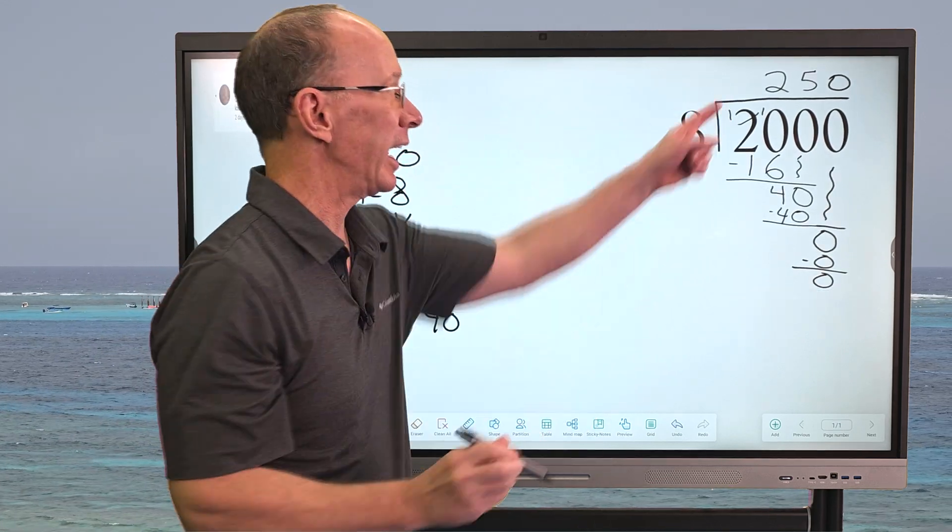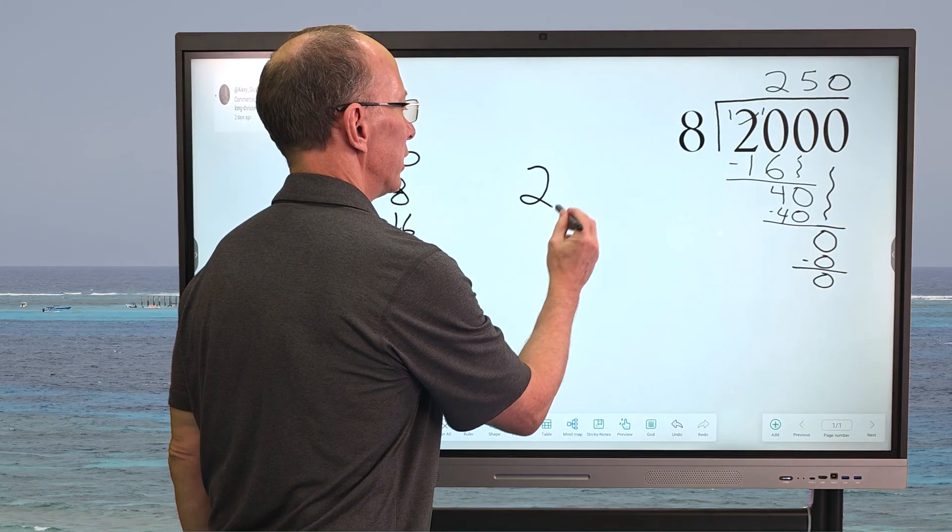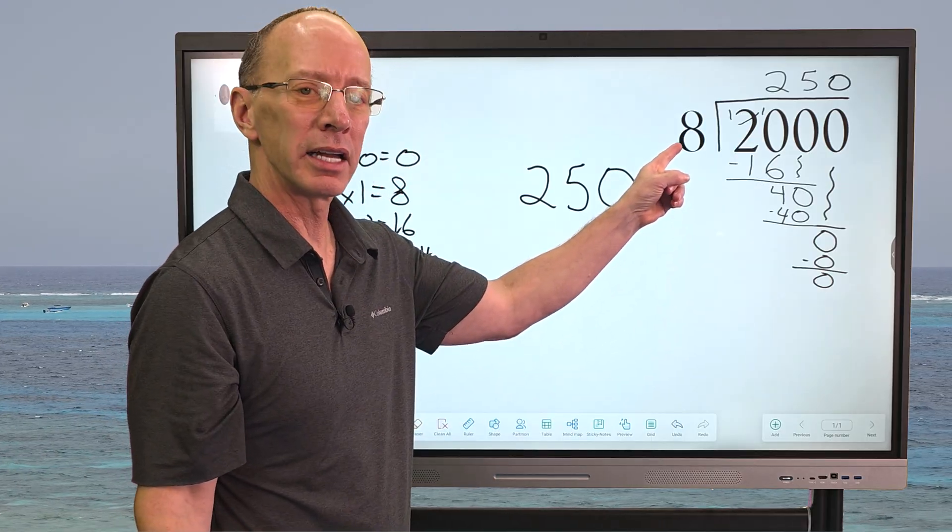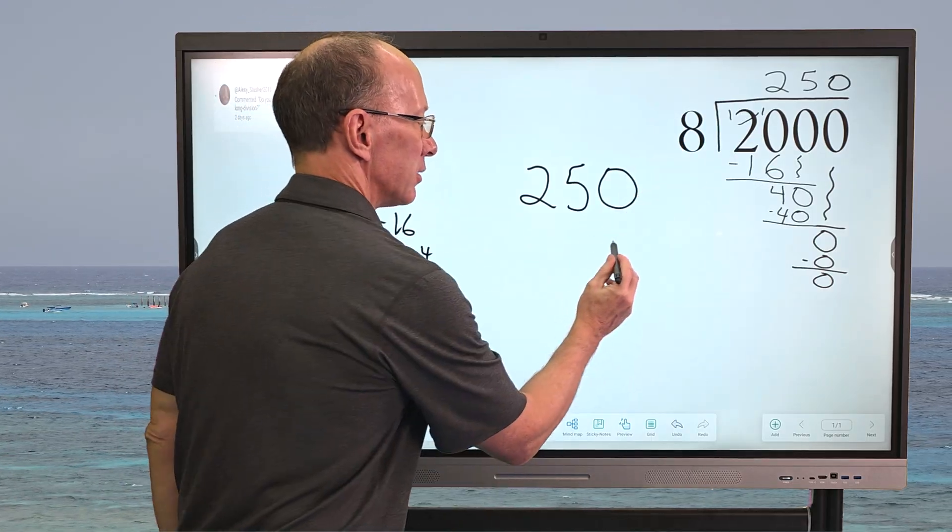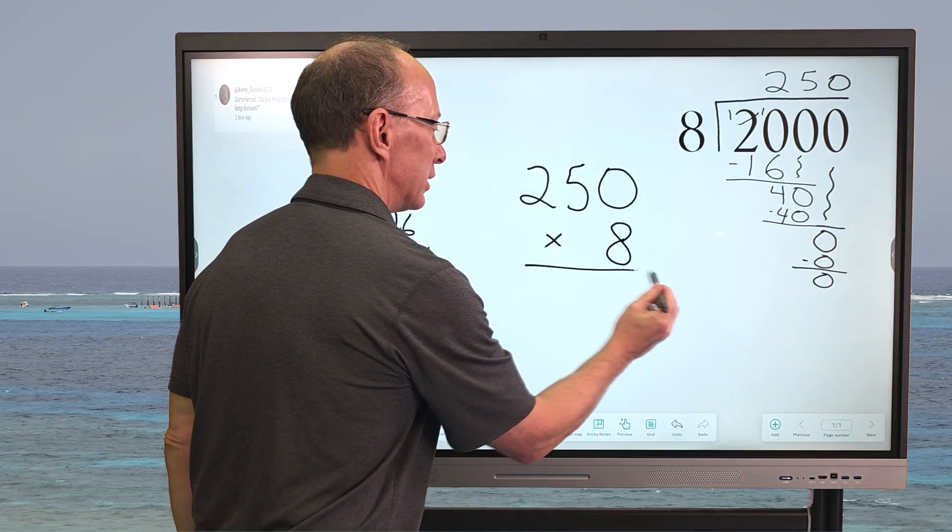We're going to take the answer right here. It's 250. Let's go ahead and put 250 right here. And now I'm going to multiply that by 8. I'm going to put the 8 right here. And I'm going to multiply. So let's go ahead and check our answer.